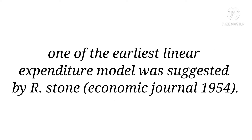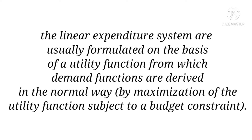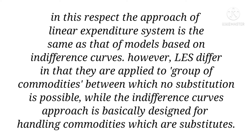One of the earliest linear expenditure models was suggested by R. Schoen in Economic Journal, 1954. The linear expenditure system is usually formulated on the basis of a utility function, from which demand functions are derived in the normal way by maximization of the utility function subject to a budget constraint. In this respect, the approach of linear expenditure system is the same as that of models based on indifference curves.